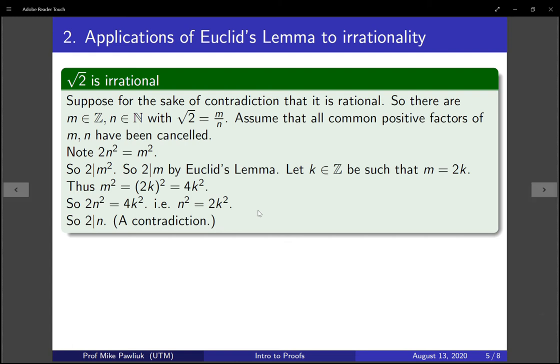Now, zooming out a little bit, what actually happened here? We used the fact that 2 divided m squared, so it has to divide m, and then that told us that 2 divides n squared, so 2 divides n. So, it's a sort of back-and-forth type thing.